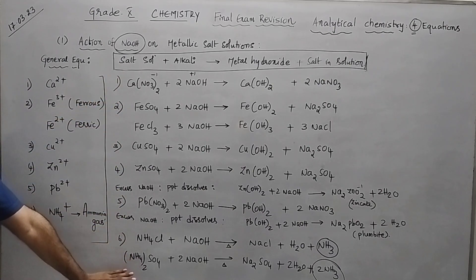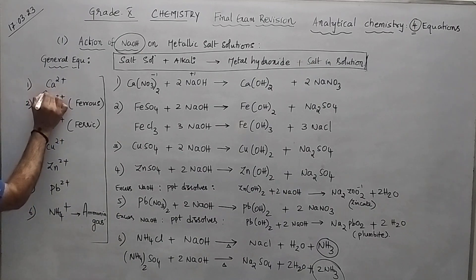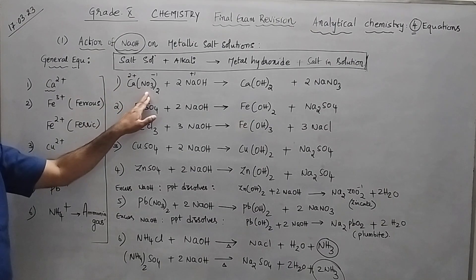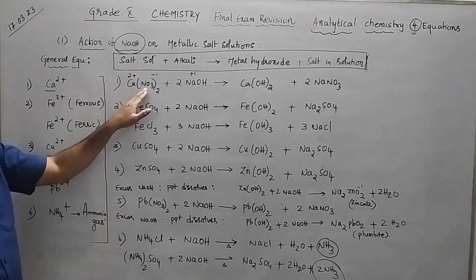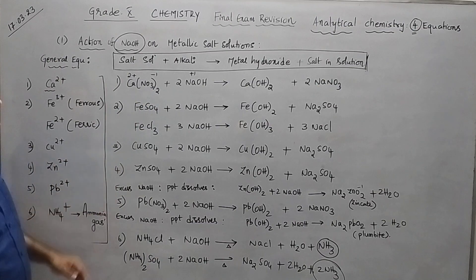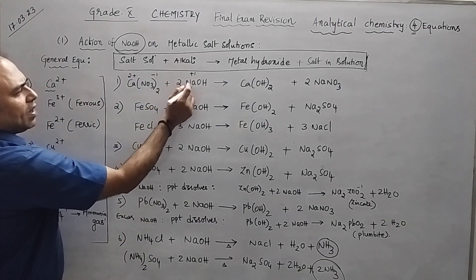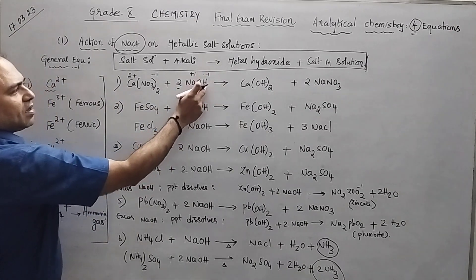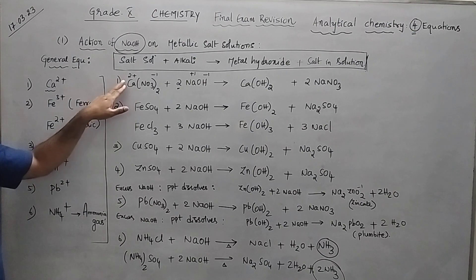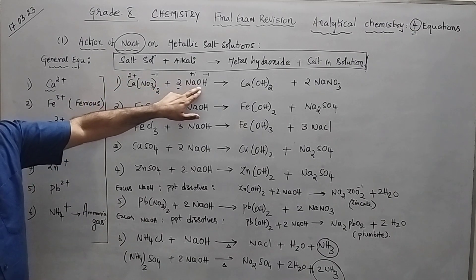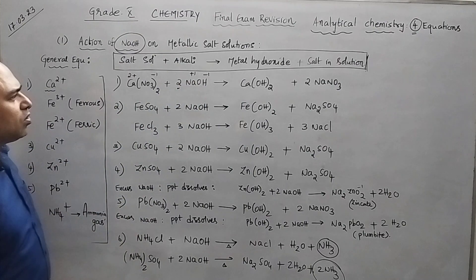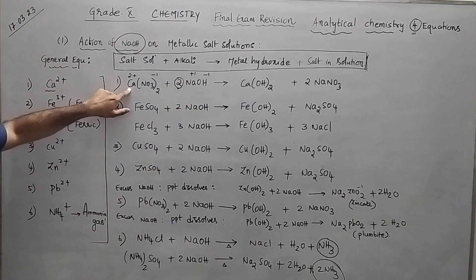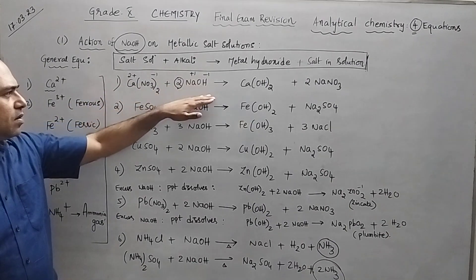We have written all six equations. The first example: take calcium nitrate. Ca²⁺ is your salt solution. Take the alkali NaOH — why do you write 2 NaOH? Because OH⁻ is minus one, but calcium has a positive charge of plus two. Therefore you need to make the hydroxide side also minus two, so we take 2 NaOH.